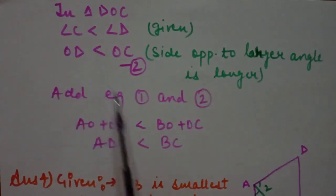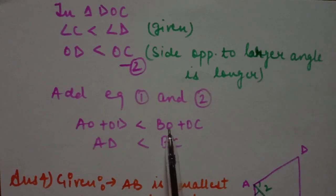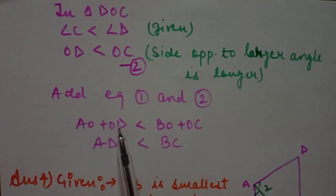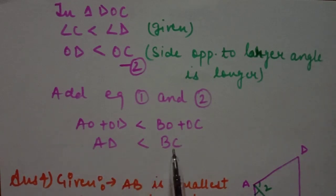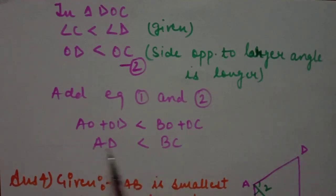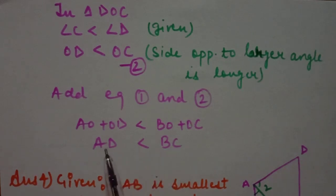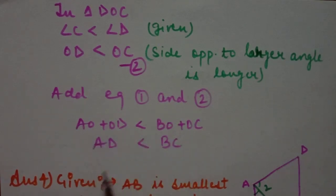Adding equations 1 and 2: OA plus OD is less than BO plus OC. Since AO plus OD equals AD, and BO plus OC equals BC, we get AD is less than BC. Hence proved — AD is smaller than BC, which is what we wanted to prove.